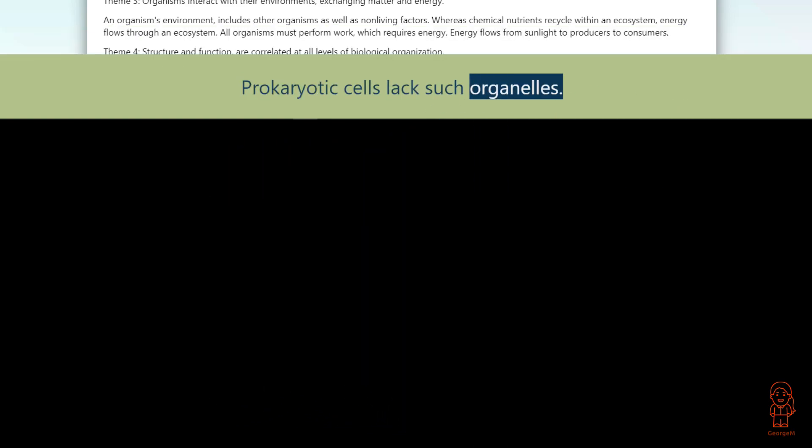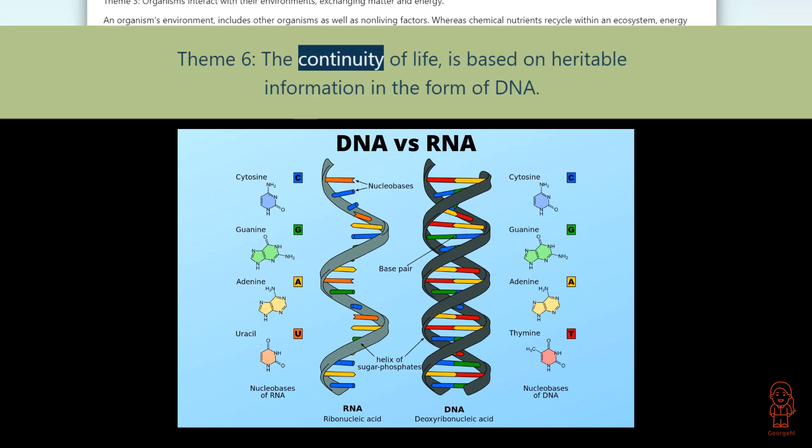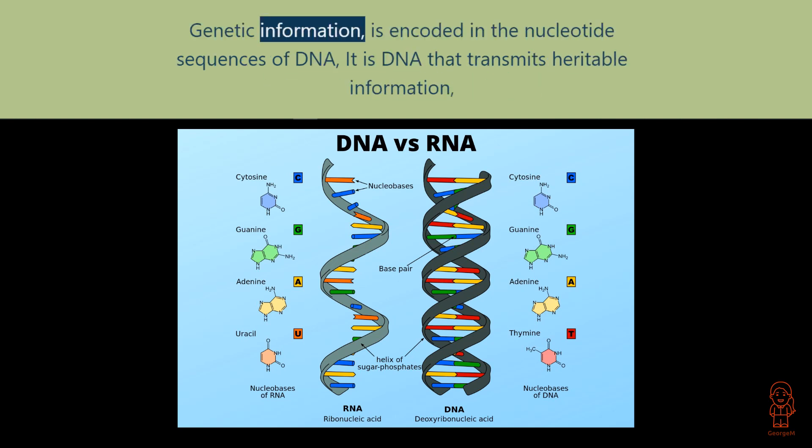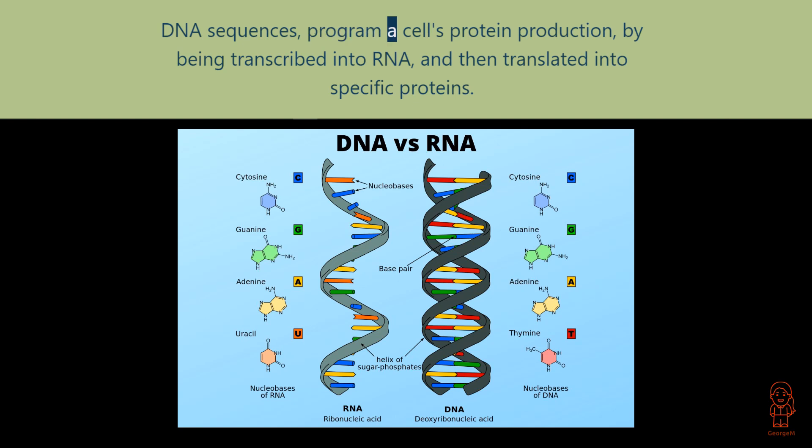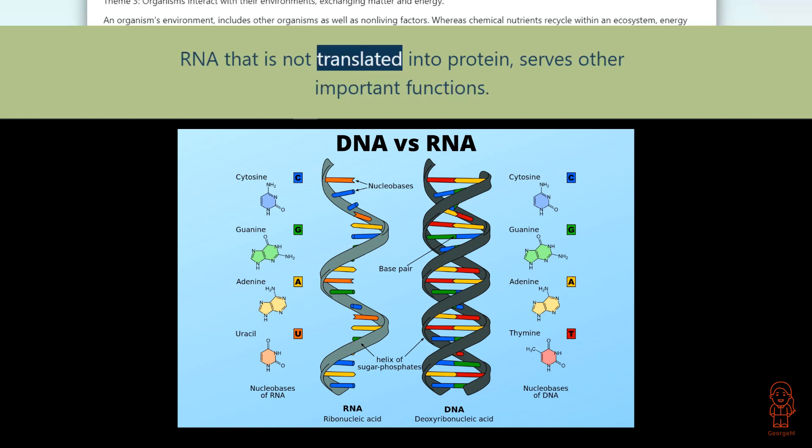Theme 6: The continuity of life is based on heritable information in the form of DNA. Genetic information is encoded in the nucleotide sequences of DNA. It is DNA that transmits heritable information from parents to offspring. DNA sequences program a cell's protein production by being transcribed into RNA and then translated into specific proteins. RNA that is not translated into protein serves other important functions.